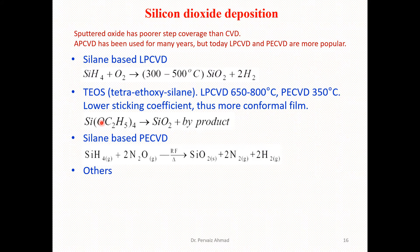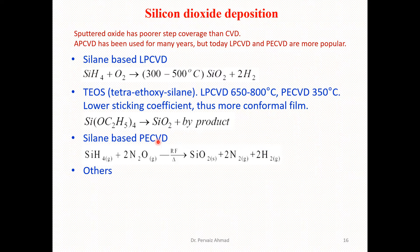The chemical reactions for SiO₂ deposition differ depending on the technique: LPCVD requires higher temperature while PECVD operates at lower temperature. Silane-based PECVD with RF heating yields silicon dioxide along with nitrogen and hydrogen as byproducts.